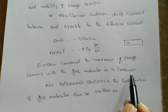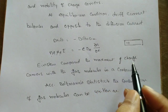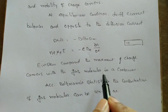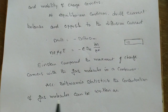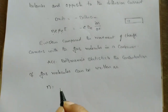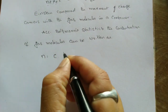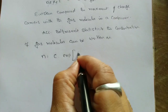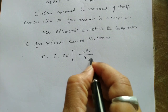Einstein compared the movement of charge carriers with gas molecules in a container. He assumed that charge particles behave like gas molecules in a container. According to Boltzmann statistics, the concentration of gas molecules can be written as n equals a constant times the exponential expression.